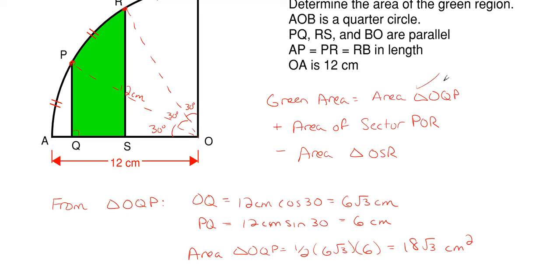Well the second area which is the area of the circle sector POR is just as easy. We don't have to determine really any sides here, we're just going to take the area of the circle sector utilizing the 30 degree angle in here.